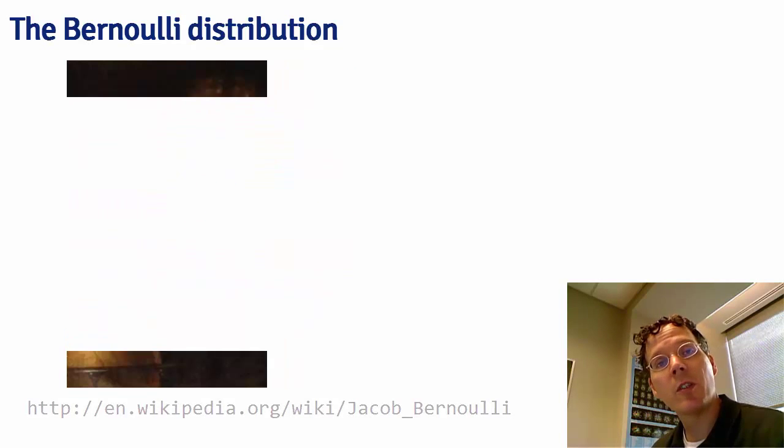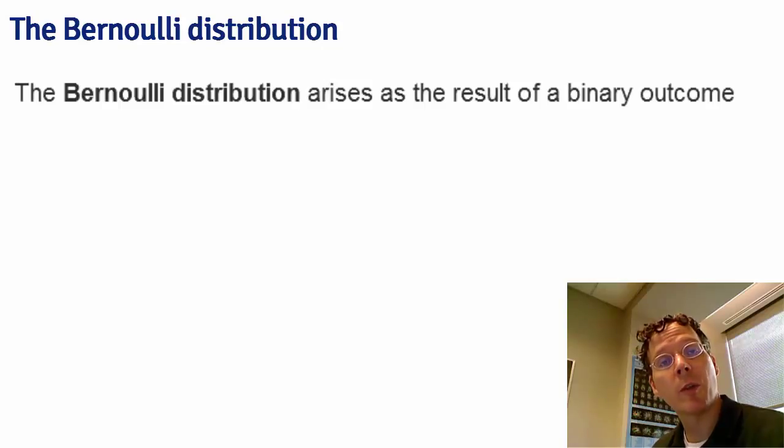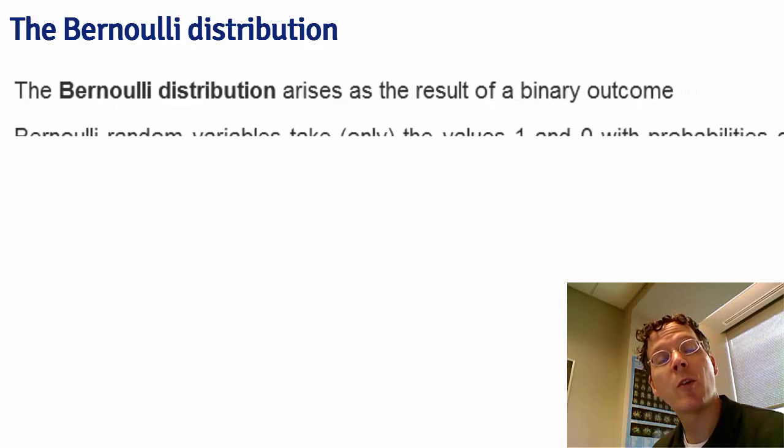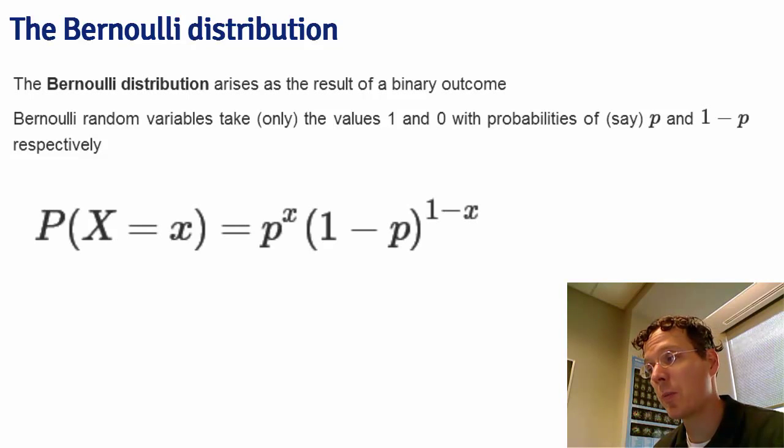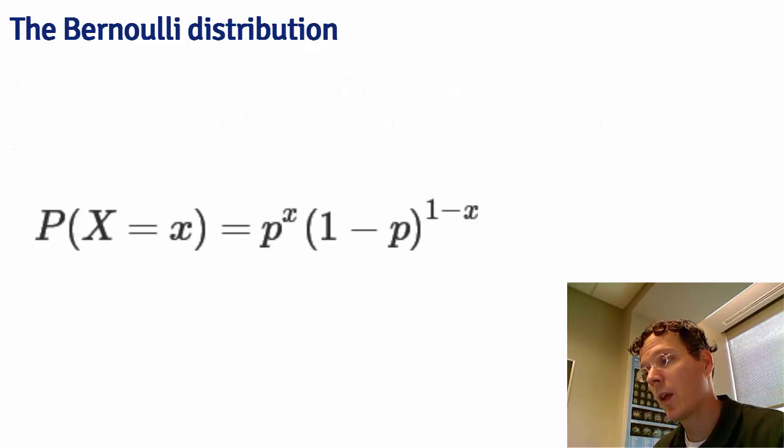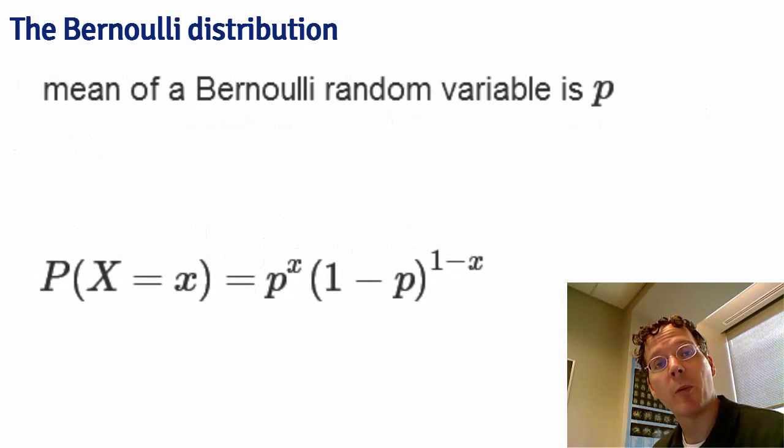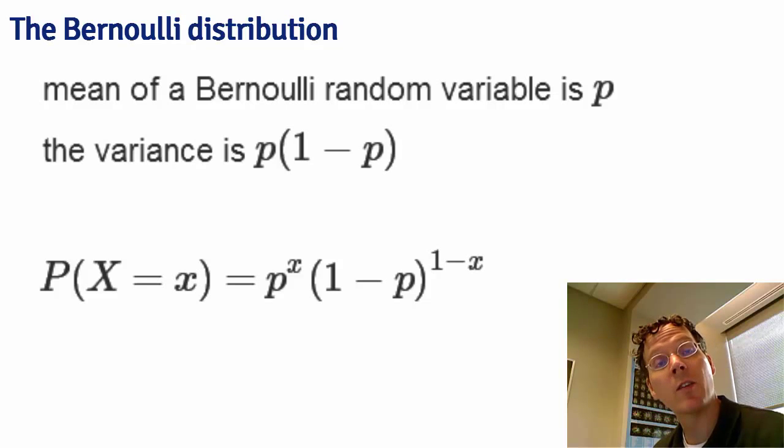The Bernoulli distribution arises out of a coin flip, say with a zero for a tail and a one for a head. You have a potentially biased coin with probabilities p for a head and one minus p for a tail. We usually write the Bernoulli probability mass function as p to the x, one minus p to the one minus x. The mean of a Bernoulli random variable is p and the variance is p times one minus p.